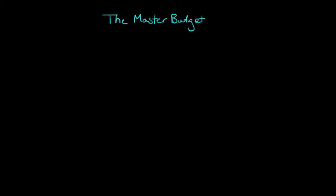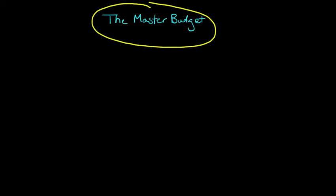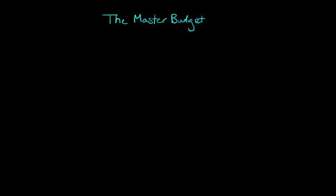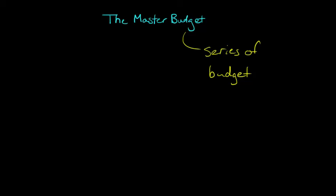In this video, we're going to talk about the master budget. The master budget is not actually one budget — it's not one really large budget for the entire firm. It's actually a series of interrelated budgets that detail the sales, production, and financial goals for the firm.